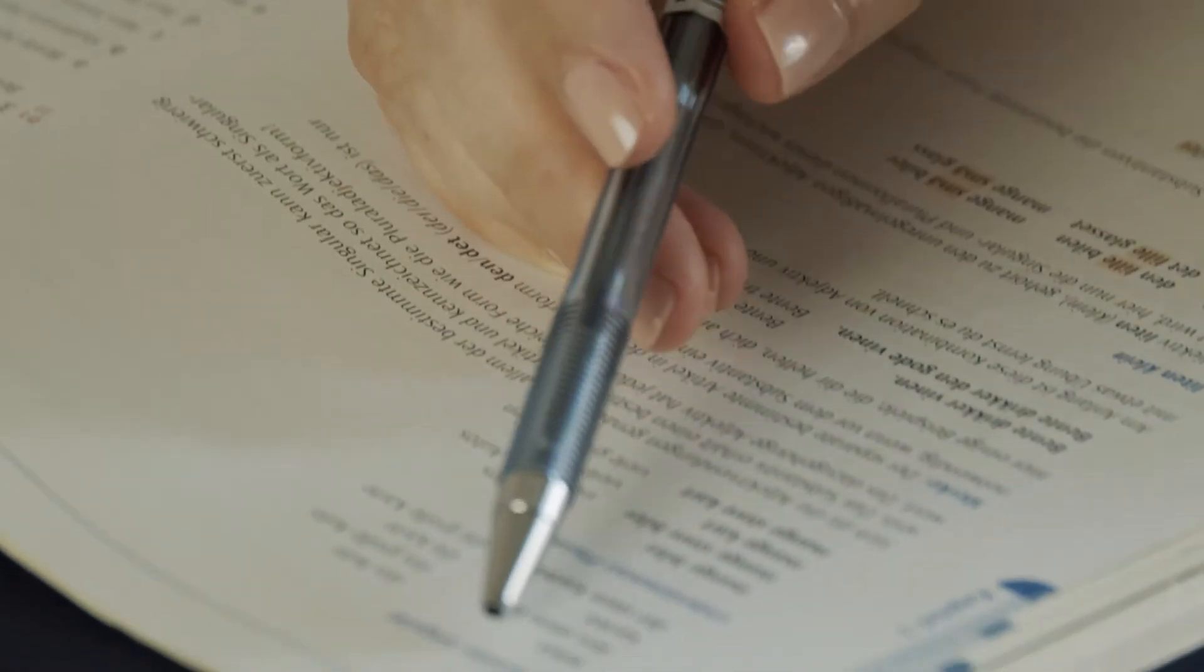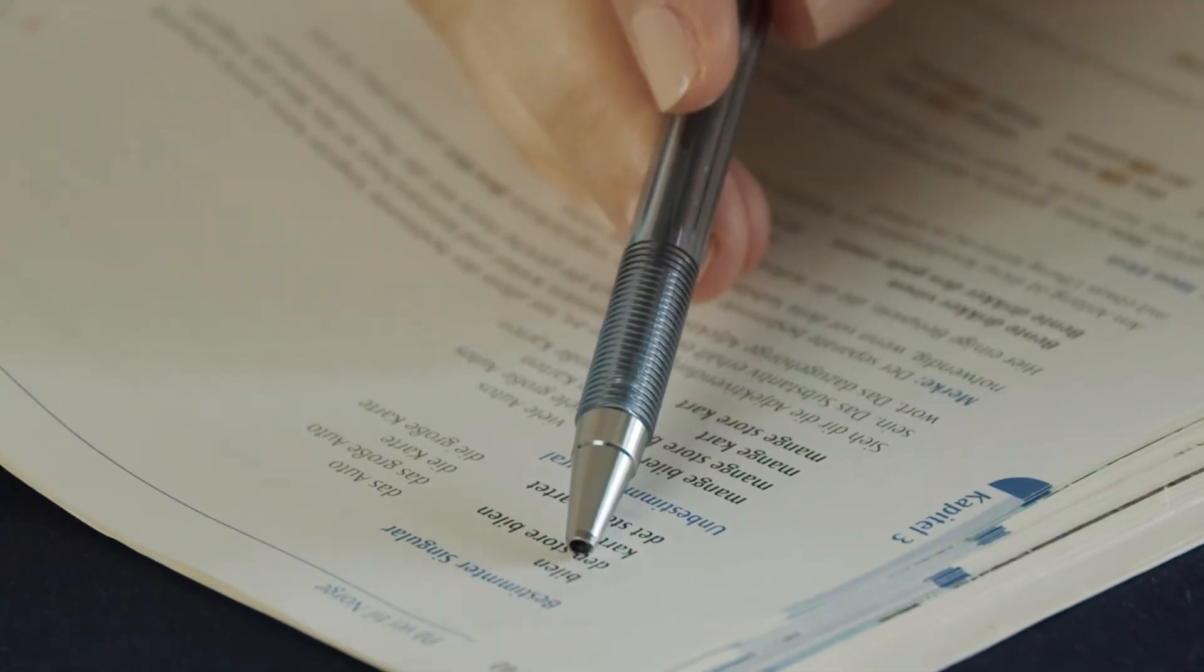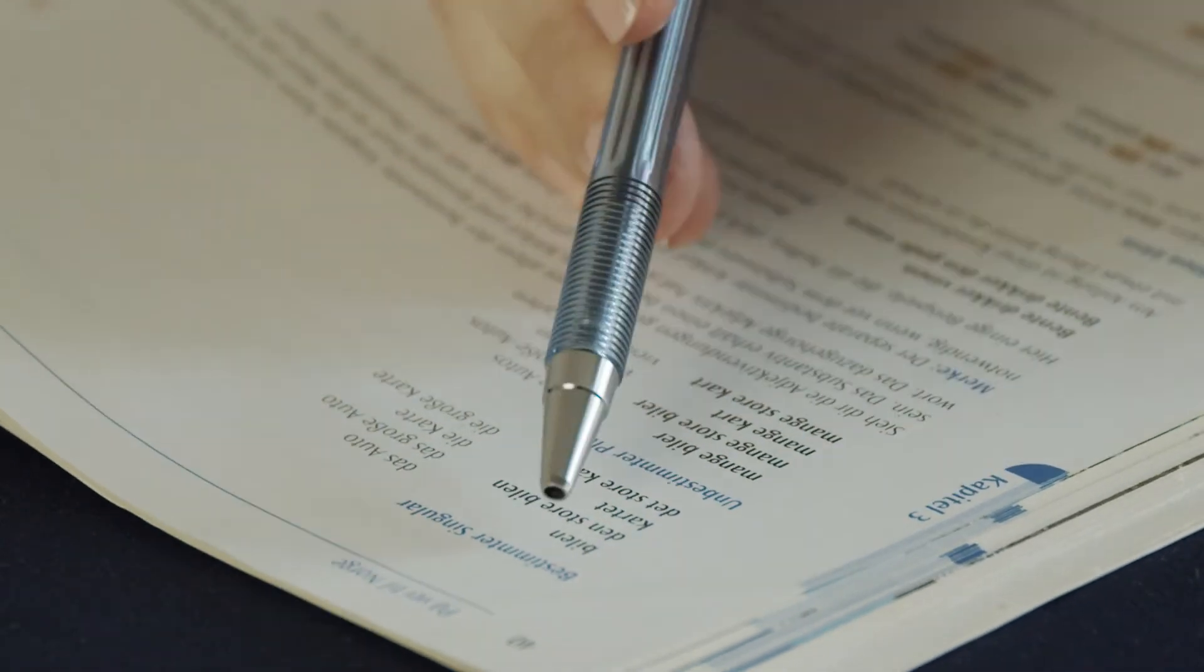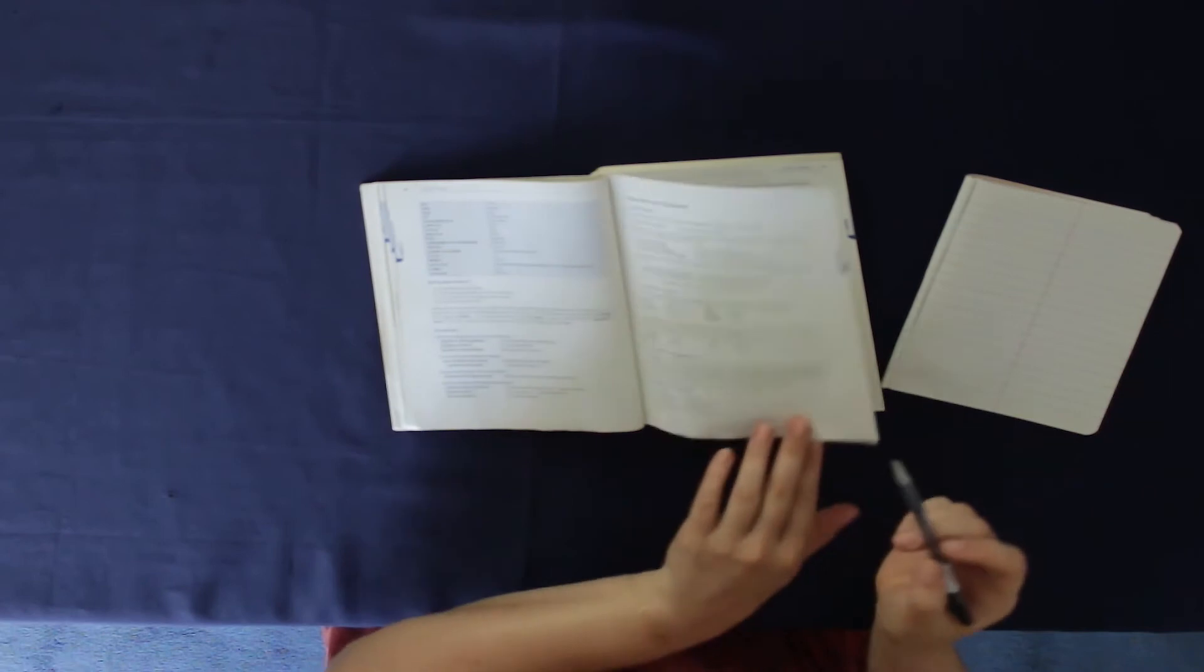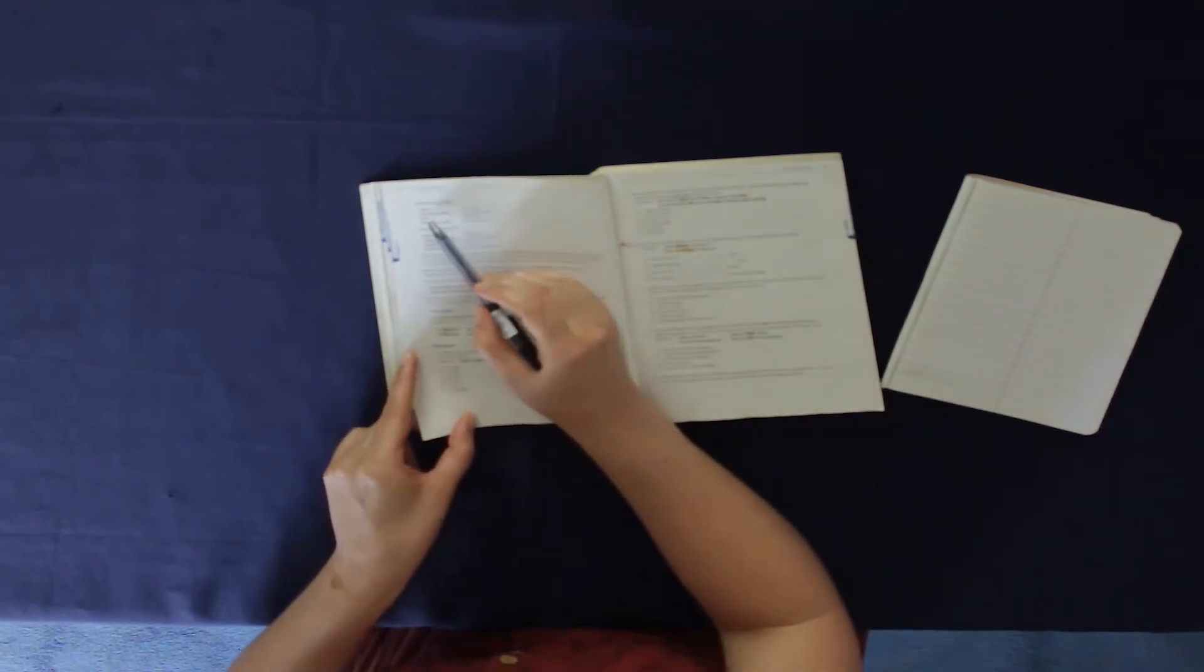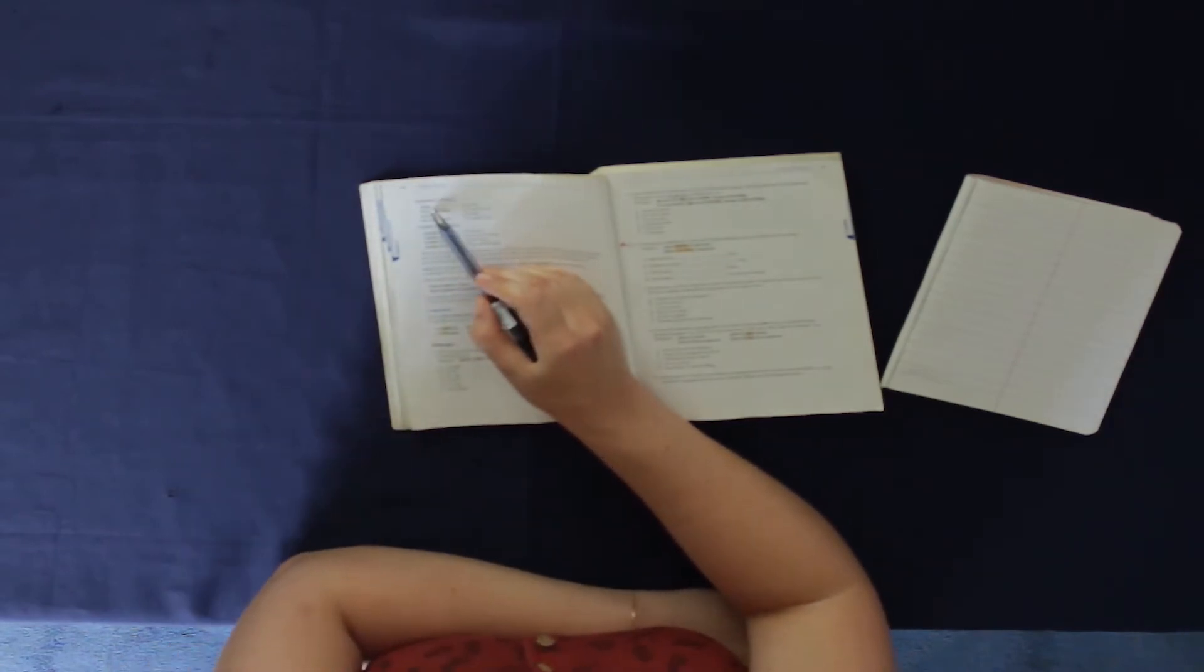Now let's look at the definite singular. Bilen, the car. So the en that we had in front of the word before now moves to the end of the word, Bilen the car. Den store Bilen, the big car, we're adding an e to the adjective.